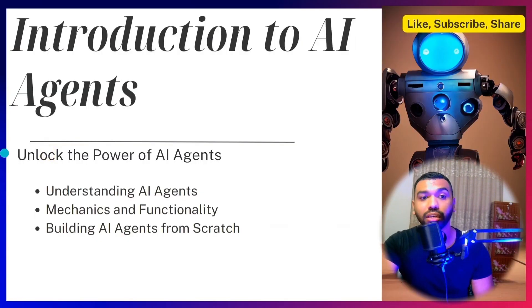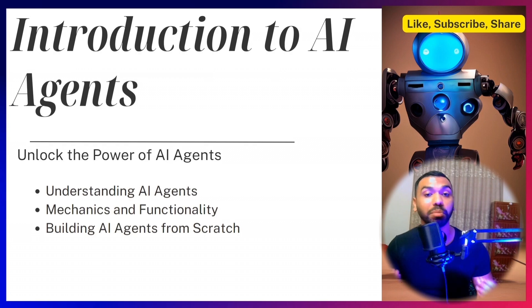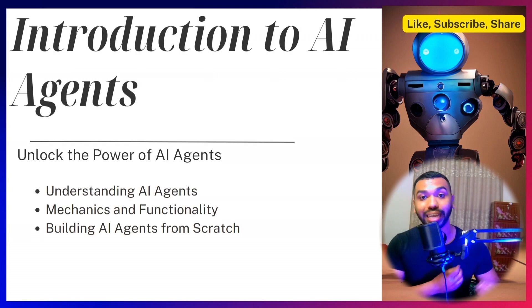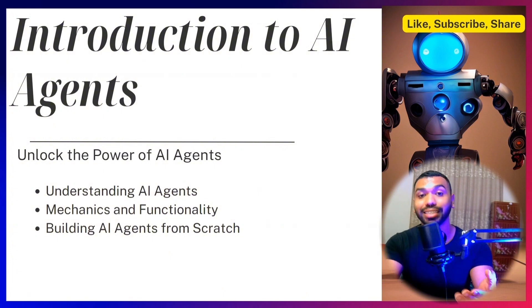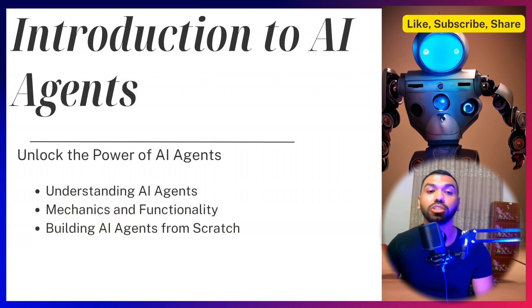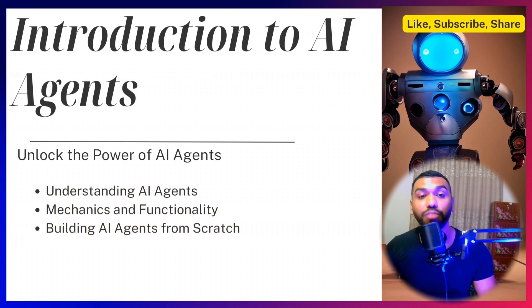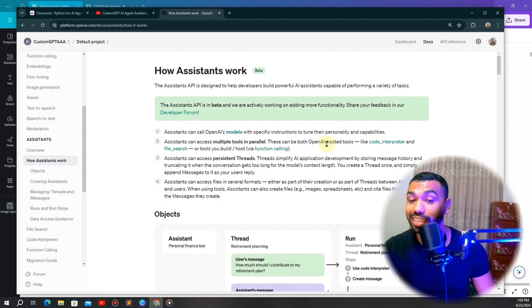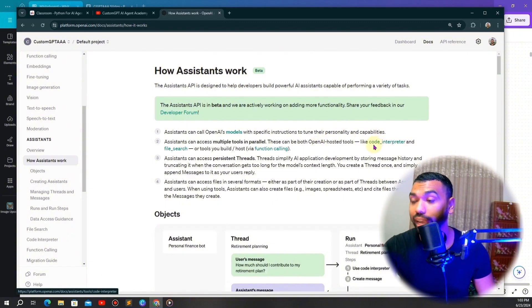An agent is powered by a large language model, or LLM — think GPT-3.5, GPT-4 Turbo, etc. This is the brain behind the agent. The agent can take a query, reason about it, decide if it needs to use a specific tool, and then use that tool to achieve the result or affect its environment. The OpenAI assistant has three kinds of tools available: code interpreter, file search, and function calling.